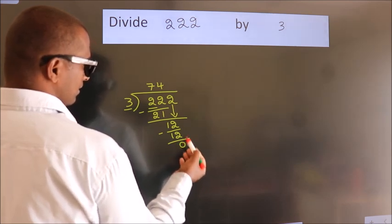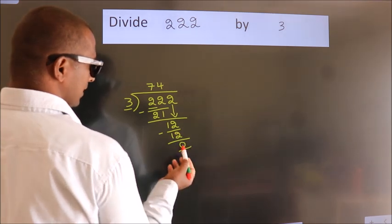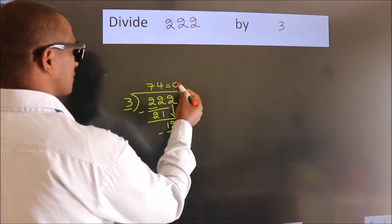After this, no more numbers to bring down. And we got remainder 0. So this is our quotient.